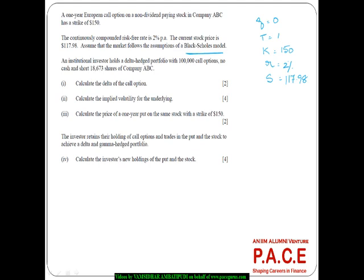An institutional investor holds a delta-hedged portfolio with 100,000 call options. The delta of these 100,000 call options will be 100,000 × delta. There is no cash, and the investor is short 18,673 shares. Each share in a short position has a delta of minus 1.